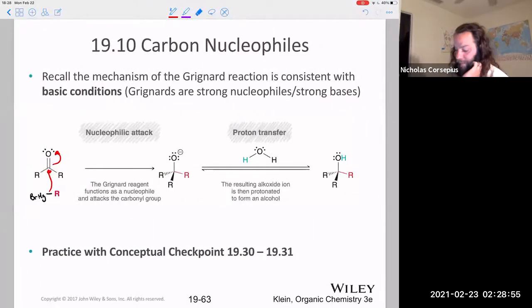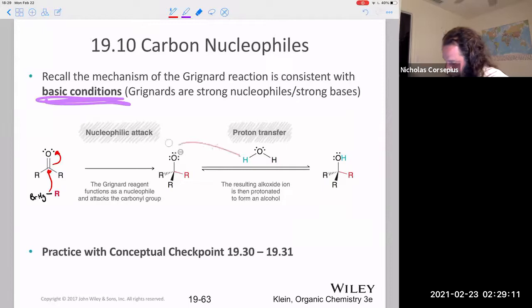These are basic conditions. Grignards are strong nucleophiles that will react only under basic conditions. And so again, our last step is we have this deprotonated oxygen. We have to protonate. So that's why we'll treat with water, or some source of acid to protonate that oxygen, creating that alcohol group.